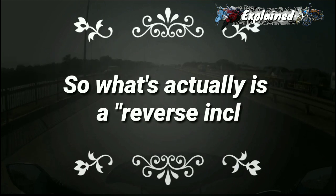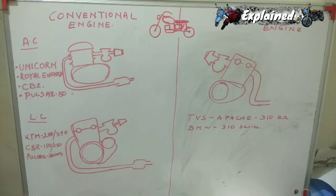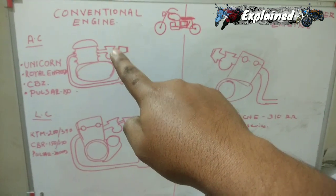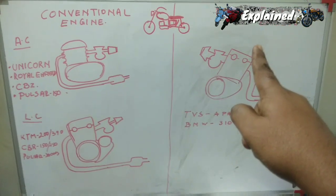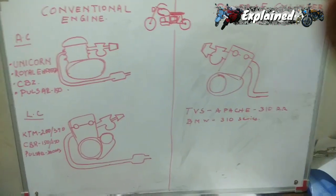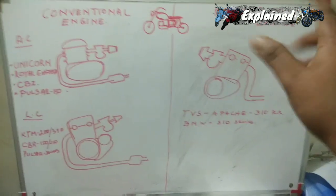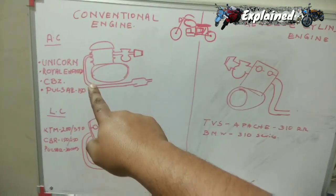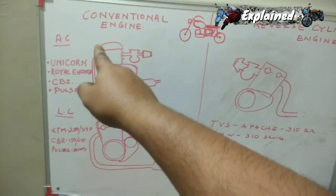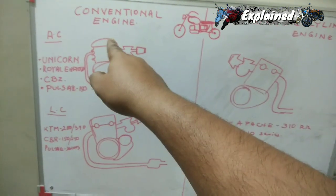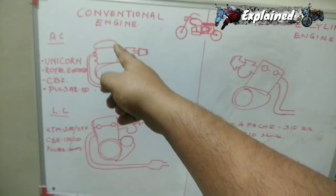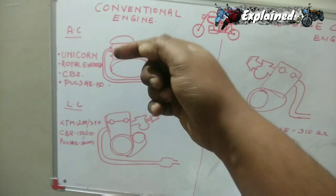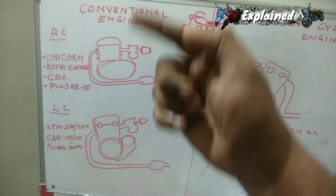Now let's come to the most-used jargon: reverse inclined. In the drawing, I've drawn a very basic motorcycle in the center. On the left is the conventional engine setup and on the right is the reverse cylinder engine configuration. In the conventional setup, the exhaust valve is in front of the engine and the inlet valve is towards the rear, so the carburetor is placed behind the cylinder head and the exhaust manifold or bent pipe is placed in front.